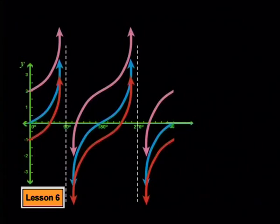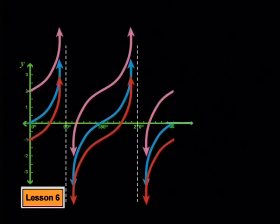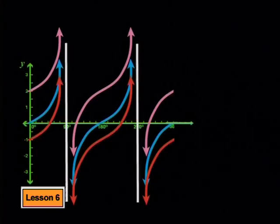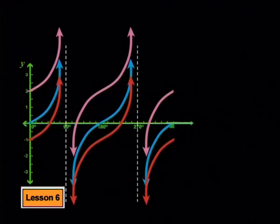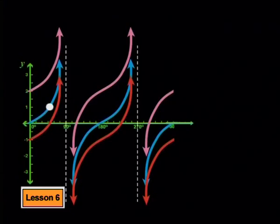Now we need to see how the tan graph changes if we change the q value. Have a look at three graphs — they are all tan graphs, they all curve in the same way, and they have the same asymptotes at 90 degrees and 270 degrees. The blue one in the middle is the parent graph y equals tan x, cutting the x-axis at 0 and 180 degrees. At 45 degrees the y value is 1, and at 135 degrees the y value is negative 1.